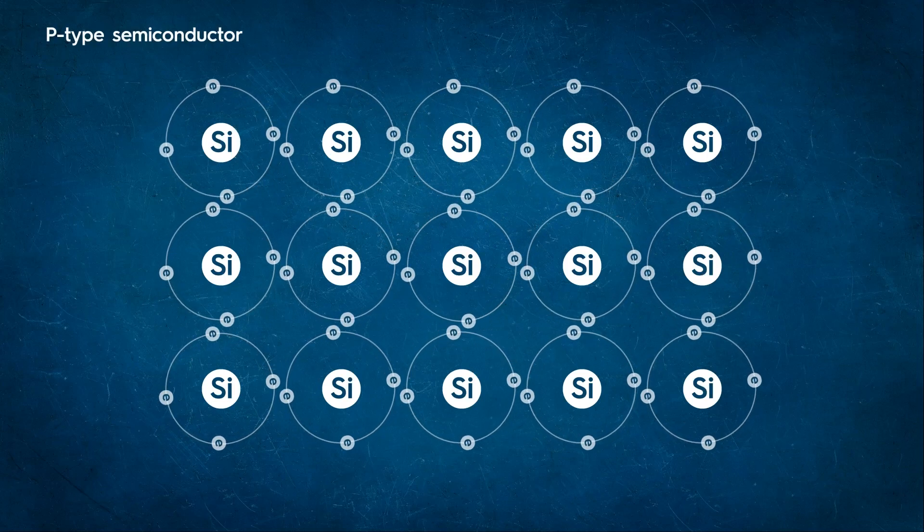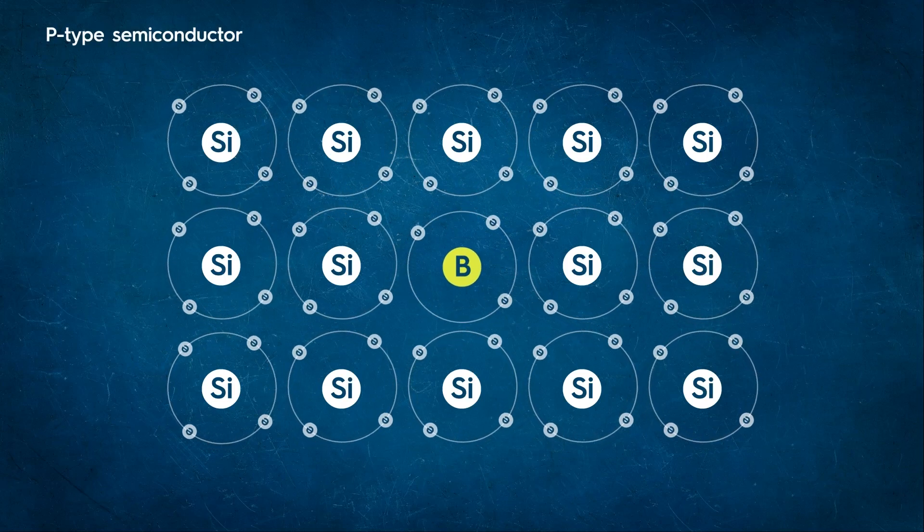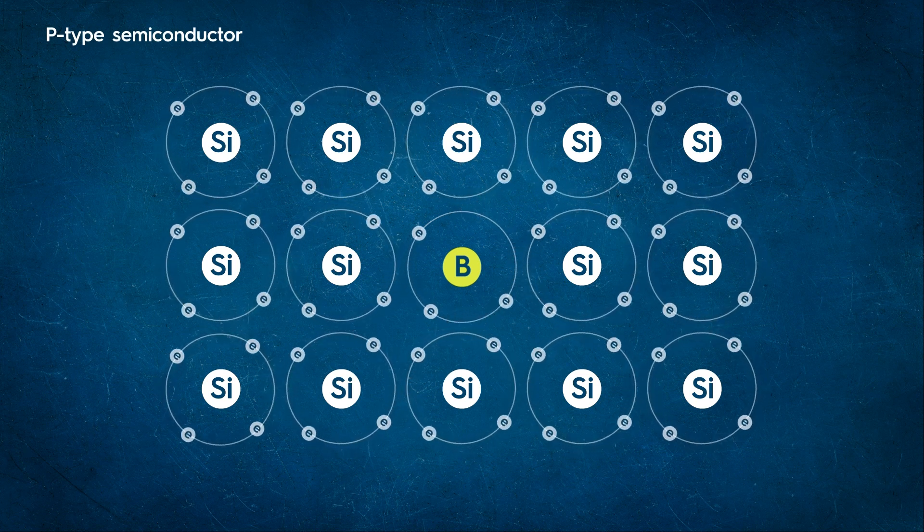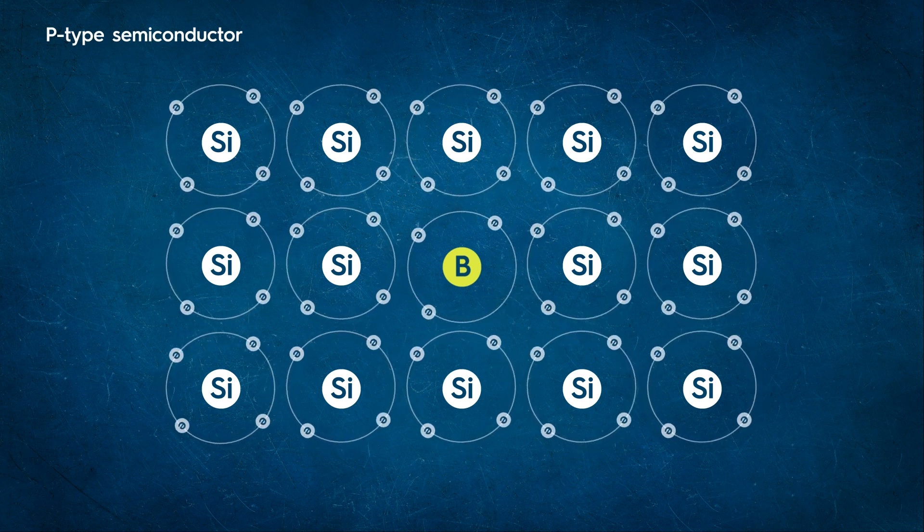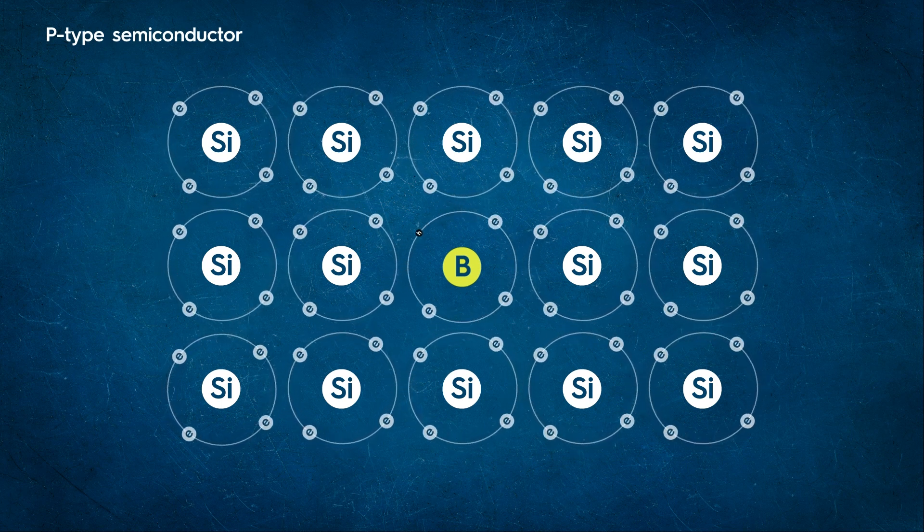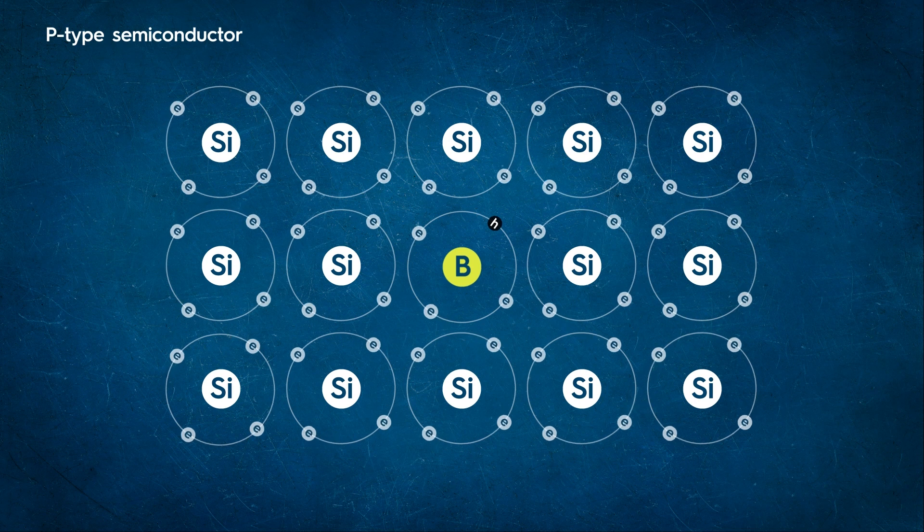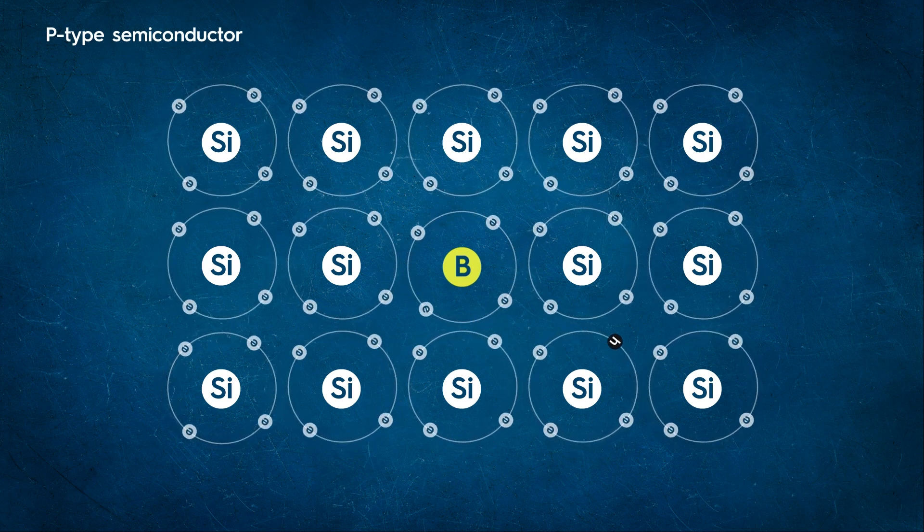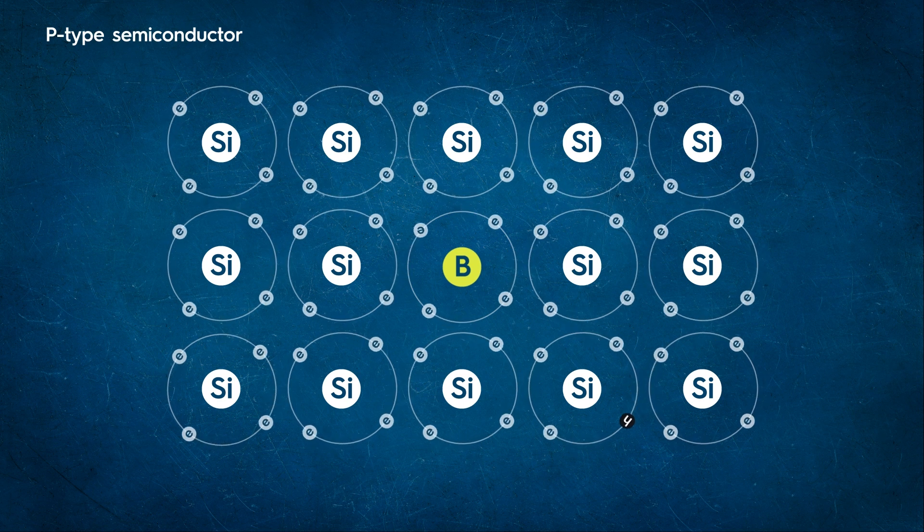Similarly, when a trivalent impurity is added to silicon, it forms covalent bonds with the three nearby silicon atoms and does not have an electron to offer to the fourth silicon atom. So the bond between the trivalent impurity and the fourth silicon atom creates a hole. An electron from the nearby silicon atom may jump to fill this hole, thus creating a vacancy in the new site. Thus, the hole is available for conduction.